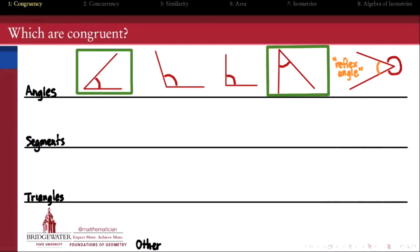How about line segments? What does it take for a pair of line segments to be considered, quote, the same, or congruent?